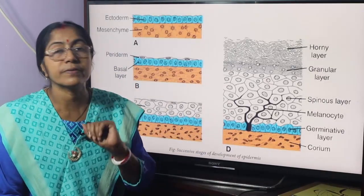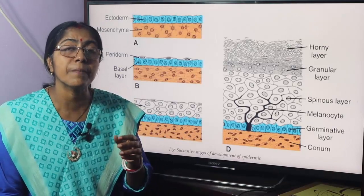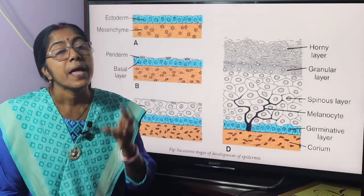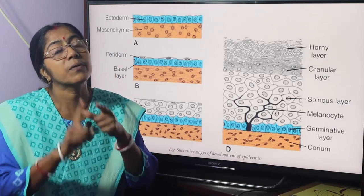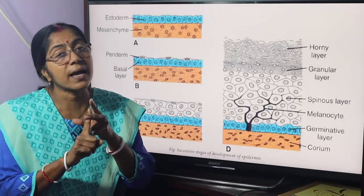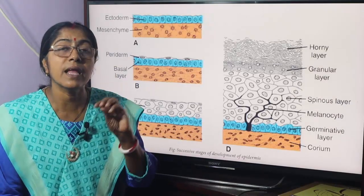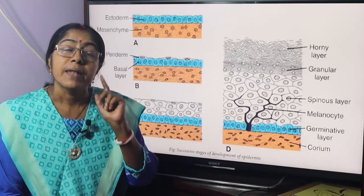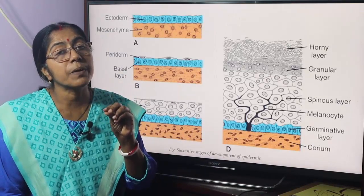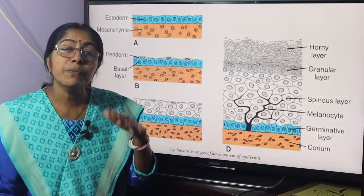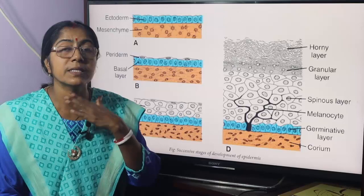The dermis is derived from underlying mesenchyme, which originates from three sources: lateral plate mesoderm, paraxial mesoderm, and neural crest. Lateral plate mesoderm contributes to the dermis of the body wall and limbs — the ventral and lateral walls, and the superior and inferior extremities.